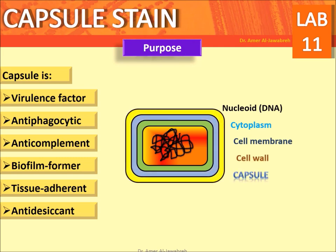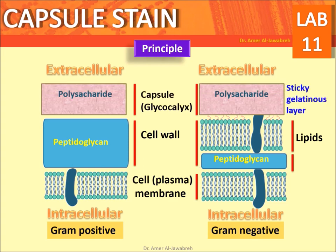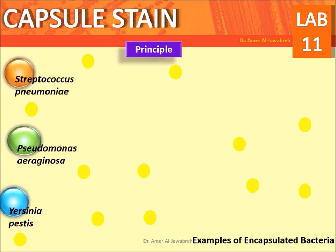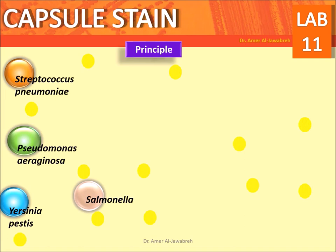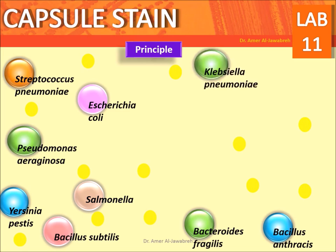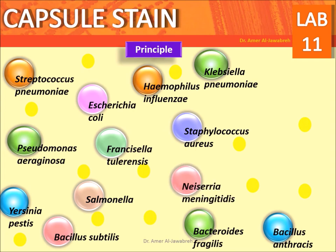The capsule is a virulence factor with properties including anti-phagocytic, anti-complement, biofilm formation, tissue adherence, and anti-desiccant. All gram-positive and gram-negative bacteria have a cell membrane and cell wall, but some have a capsule or glycocalyx — a sticky gelatinous layer. Examples include Pseudomonas aeruginosa, Streptococcus pneumoniae, Yersinia pestis, Salmonella, Bacteroides fragilis, Escherichia coli, Bacillus subtilis, Bacillus anthracis, Klebsiella pneumoniae, Staphylococcus aureus, Haemophilus influenzae, Francisella tularensis, Neisseria meningitidis, Cryptococcus neoformans, and Pasteurella multocida.